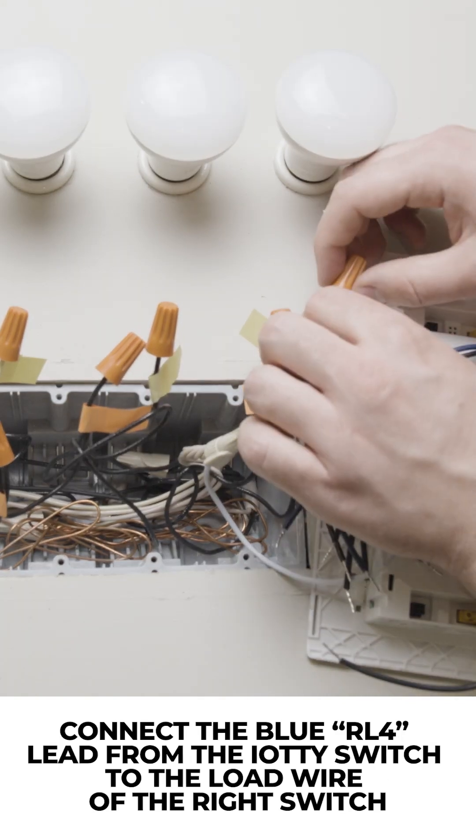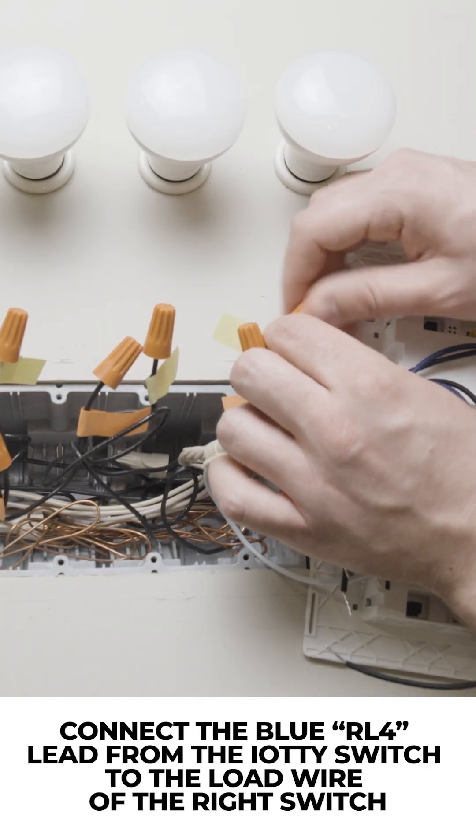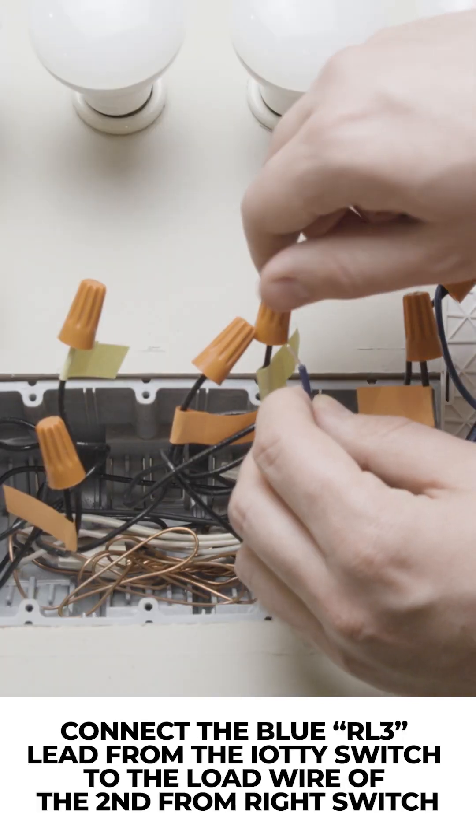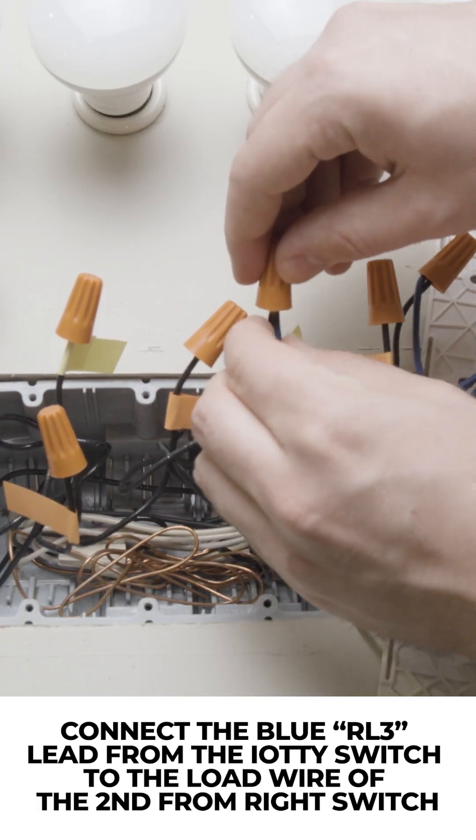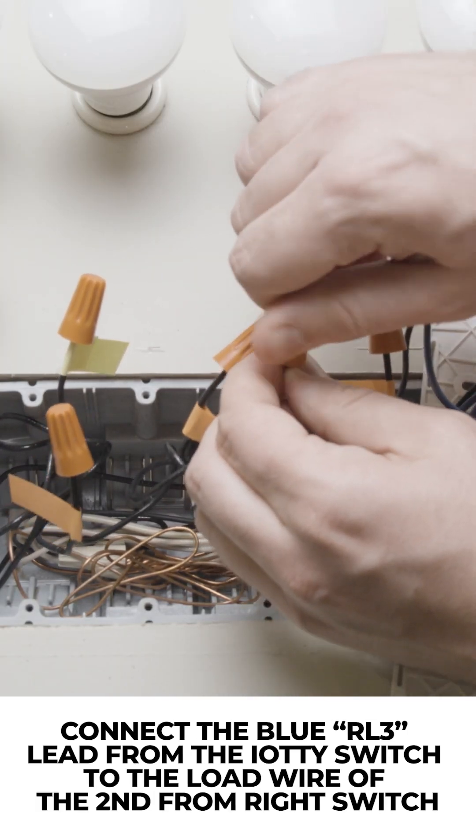Connect the blue RL4 lead of the IOTI switch to the load wire of the right switch. Connect the blue RL3 lead of the IOTI switch to the load wire of the second from right switch.